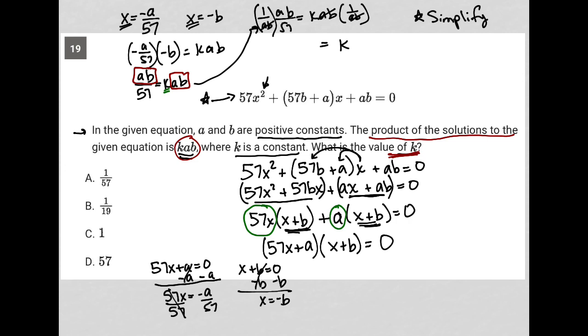That immediately crosses out the ABs, leaving me with 1 over 57. So there's my answer. K is equal to 1 over 57.